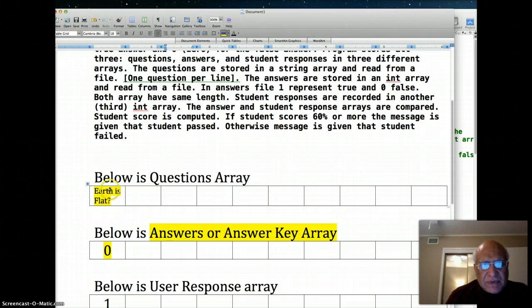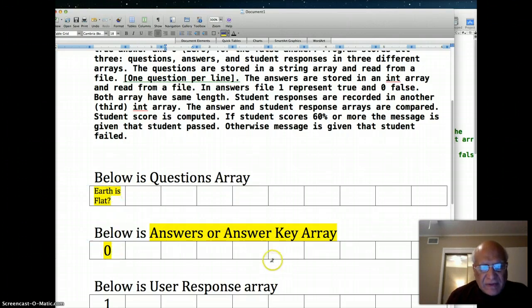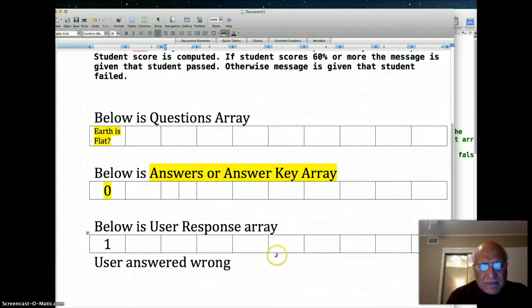As you saw in the program, the user will be asked the question and they will type 1 or 0. In our response to Earth is flat, the user answered 1, meaning they answered true, so they agreed that Earth is flat. That would be recorded in the response array. The answer to the second question will be recorded here, third answer here, and so on.